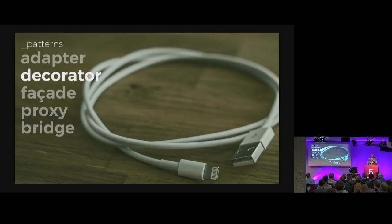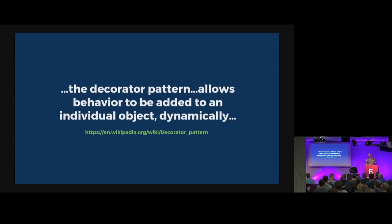Which then takes us to the decorator. The decorator is interesting because it's very, very similar — that's why I've grouped them together, because they kind of do the same thing code-wise. The decorator pattern allows behavior to be added to an individual object dynamically. So the description of what the pattern does is very different, but the actual implementation looks very similar, which is why people get tripped up. You're coding it and you go, 'Oh, this is an adapter.' Nope — it's actually a decorator.